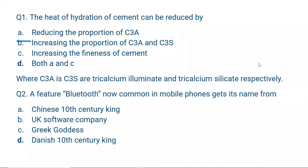Question number 1. The heat of hydration of cement can be reduced by: A. Reducing the proportion of C3A. B. Increasing the proportion of C3A and C3S. C. Increasing the fineness of cement. D. Both A and C. The correct option is D, both A and C.